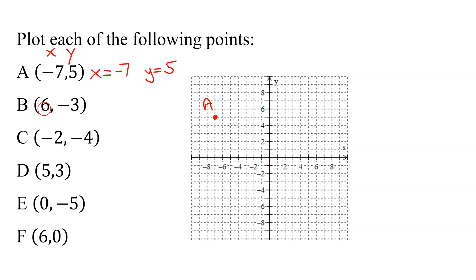Point B has the coordinates 6, negative 3, so x is 6. So again, start at the origin. x is positive 6, so you move to the right 6 units. y is negative 3, so you go down from there, 3 units. There is my point B.